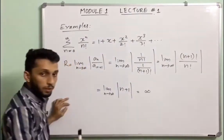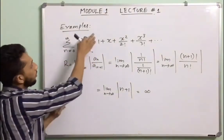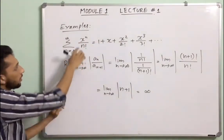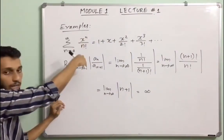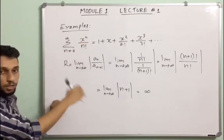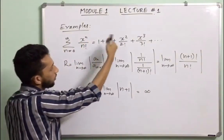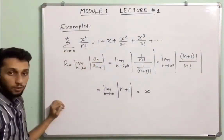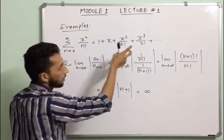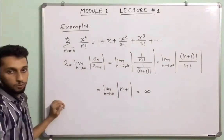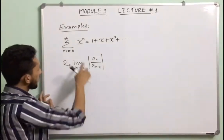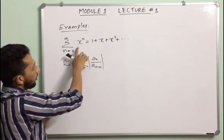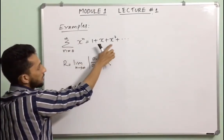Since R equals infinity, for any value of x we give, this power series converges. Whether x is 1, 2, or 3, the power series converges for all values.